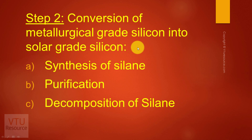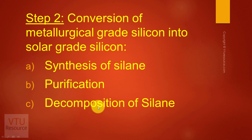Metallurgical grade silicon contains a high level of impurities at the PPM level. We are now supposed to convert metallurgical grade silicon into solar grade silicon. This conversion involves three steps: step one is synthesis of silane, step two is purification of silane, and the last step is decomposition of silane, where silane is converted into solar grade silicon.